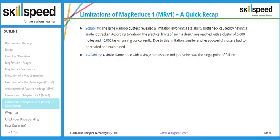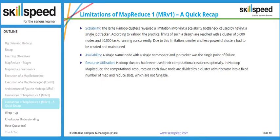The third problem is resource utilization. Hadoop clusters never used their computational resources optimally. In MapReduce, the computational resources on each node are divided by the cluster administrator into a fixed number of map and reduce slots. For example, with 100 data nodes, each node might have capacity for four map and four reduce tasks simultaneously. However, if no task is allocated to a node, those slots sit idle, wasting resources. Resource utilization is therefore very poor in MapReduce 1.x.